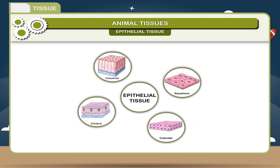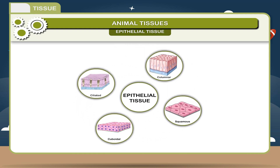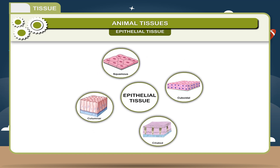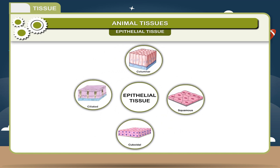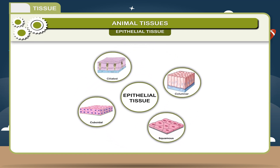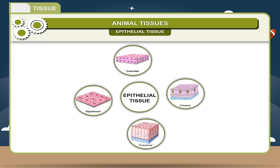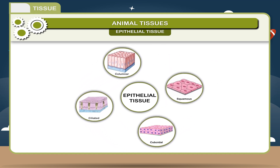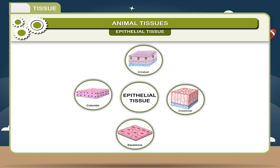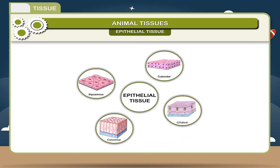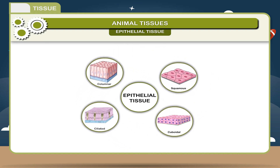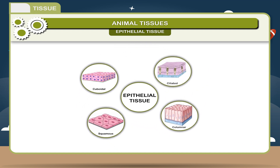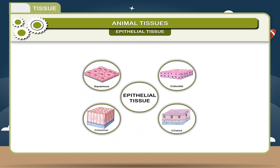Epithelial tissue — Structure: The cells of epithelial tissue are of different shapes depending upon their location and function. They may be flat, cuboidal, or columnar. These cells are tightly packed and there is no intercellular space. On the basis of the shape of the cells, the epithelial tissue is classified into four types.